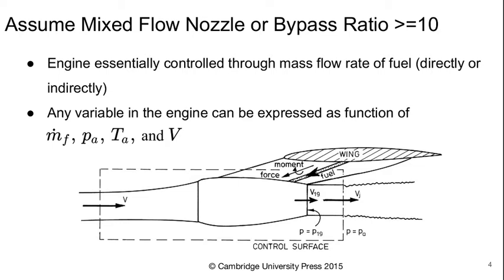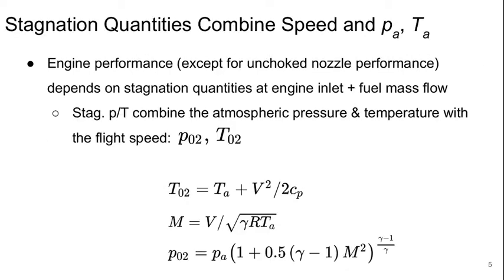Any variable in the engine can be expressed as a function of the mass flow rate of fuel, the atmospheric temperature, the atmospheric pressure, and the flight speed.